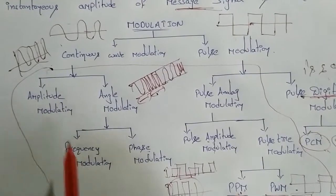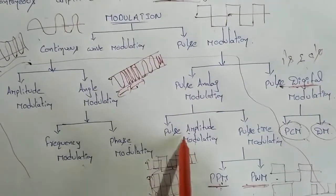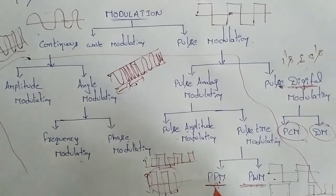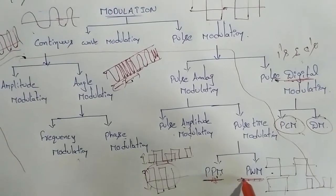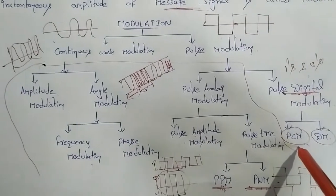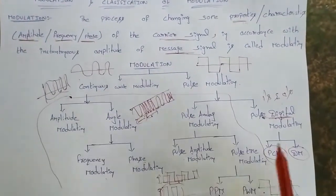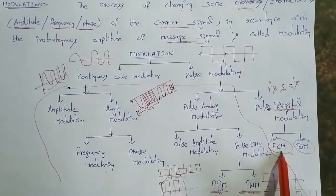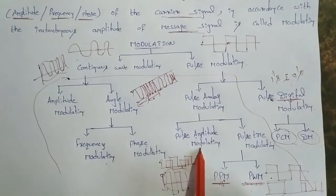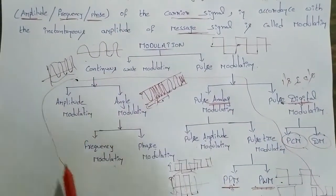Continuous wave analog types: Amplitude Modulation (AM), Frequency Modulation (FM), Phase Modulation (PM). Analog pulse types: PAM, PPM, PWM — that is Pulse Amplitude Modulation, Pulse Position Modulation, and Pulse Width Modulation. Digital pulse types: PCM (Pulse Code Modulation) and DM (Delta Modulation).